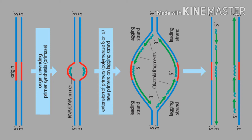Then DnaC proteins — DnaC proteins assist the DnaA proteins in loading of DnaB protein to the DNA molecule. Then DnaG proteins, which act as primase, and its function is simply adding RNA primers on the leading or lagging strand.